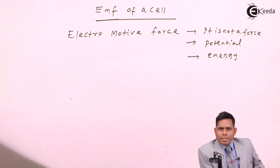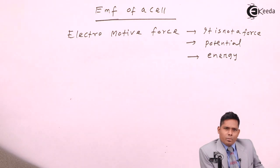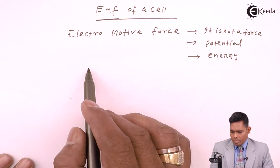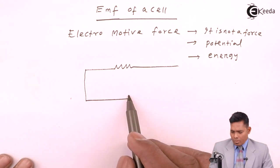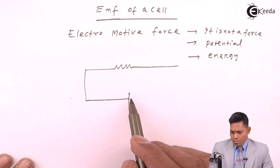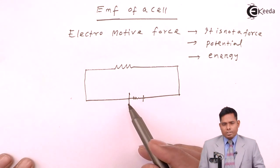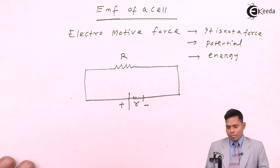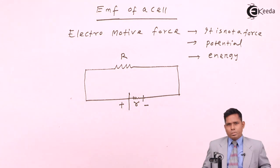We will understand the basic definition of EMF with a circuit diagram and also see how EMF differs from the terminal potential difference of the cell. Suppose we have a resistance R connected externally with a cell. Inside the cell, you can draw the internal resistance r. This side is at higher potential and the other side is at lower potential.